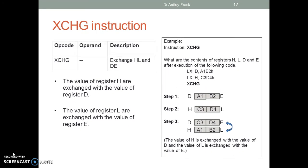Exchange: exchanges the HL and DE register pairs. The value of register H is exchanged with the value of register D, and the value of register L is exchanged with the value of register E. Example: what are the contents of registers H, L, D, E after execution? Step 1: value A1,B2 is copied to DE. Step 2: value C3,D4 is copied to HL. Exchange: the value of H is exchanged with D and the value of L is exchanged with E.